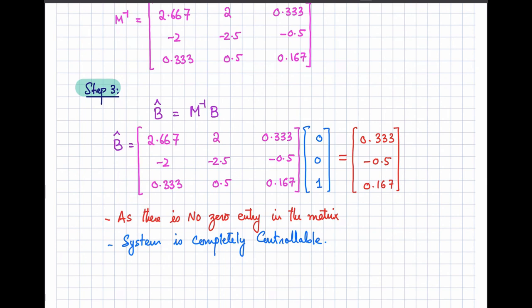To summarize this video: we discussed the meaning of controllability, examined Kalman's and Gilbert's definitions and methods to determine controllability, and worked through three examples to elaborate the concept of controllability.